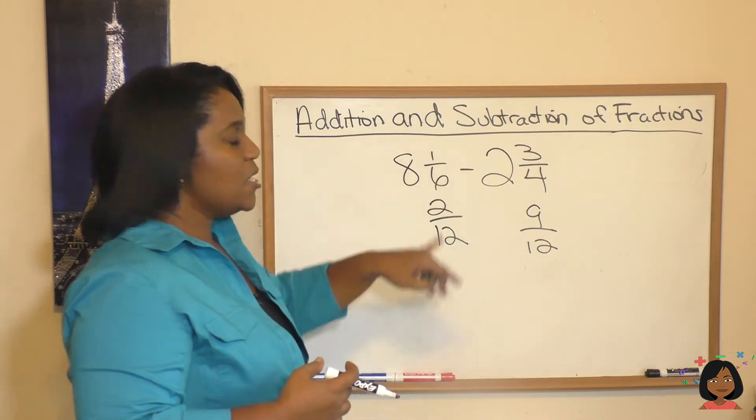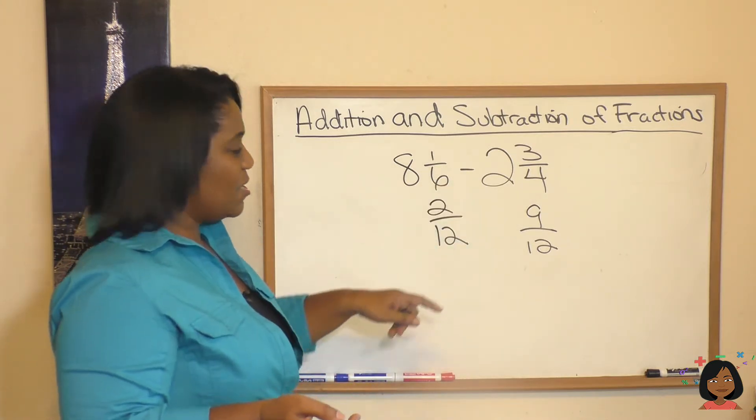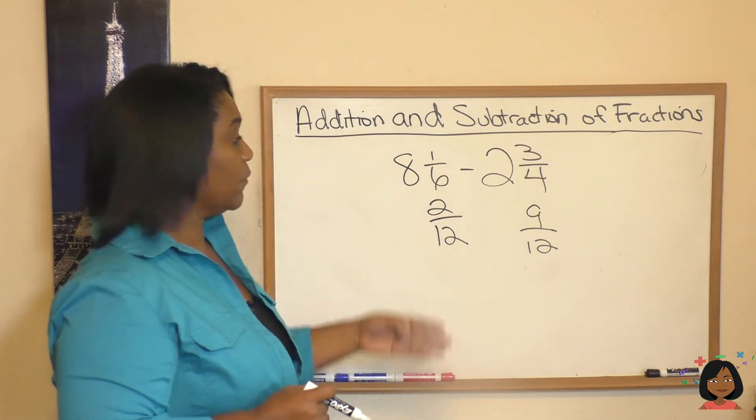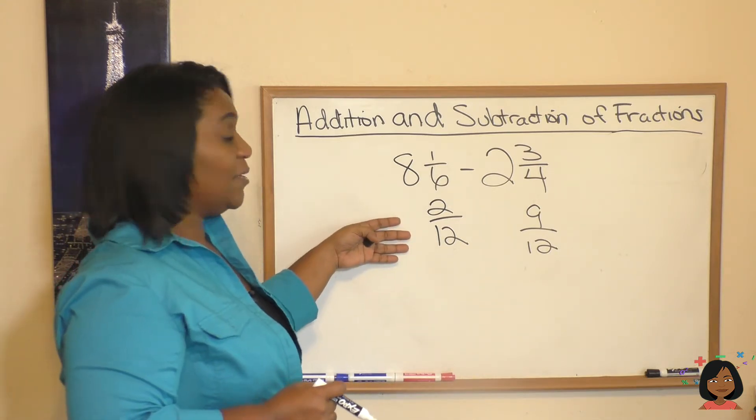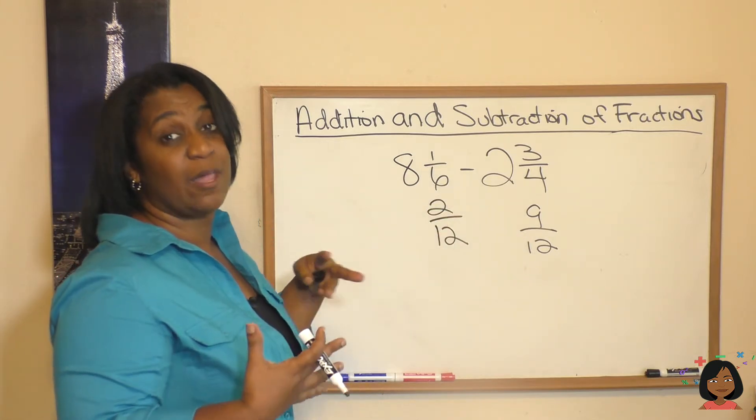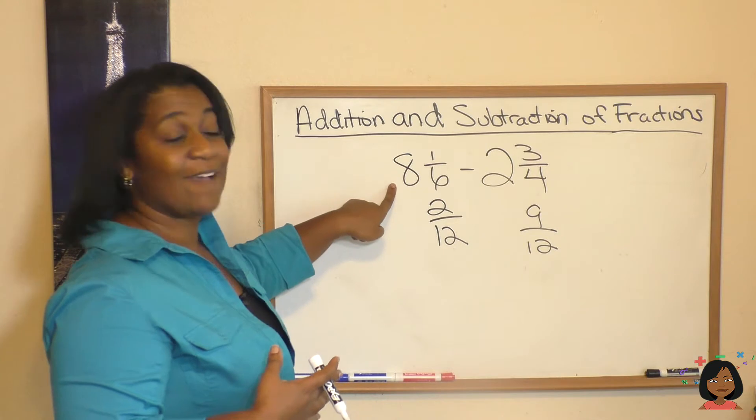So if we were just going to follow that last same kind of philosophy, deal with the whole numbers by themselves, deal with the fractions by themselves, we kind of have a problem. What's our problem? 2 twelfths is smaller than 9 twelfths.